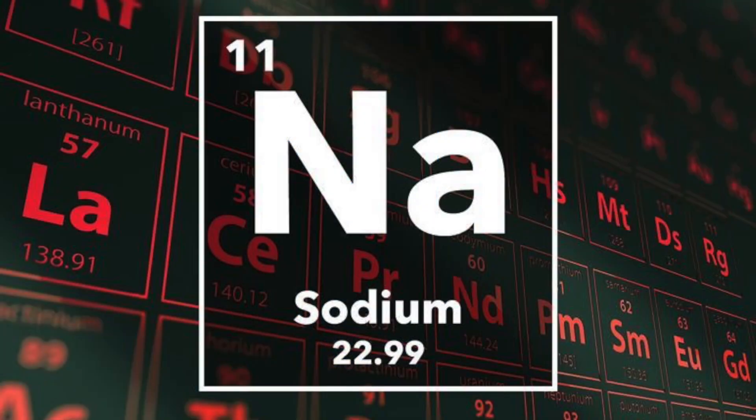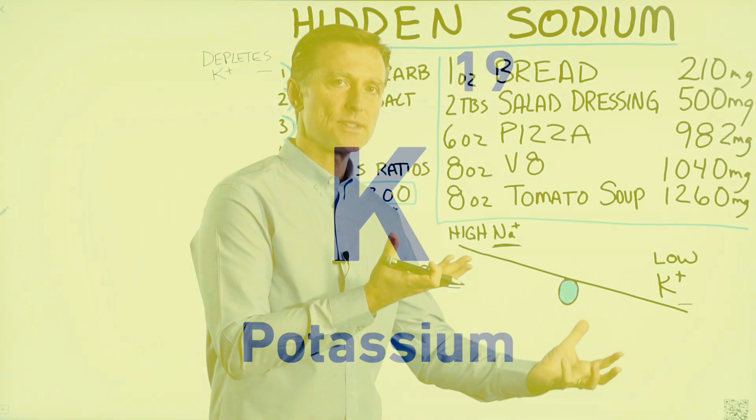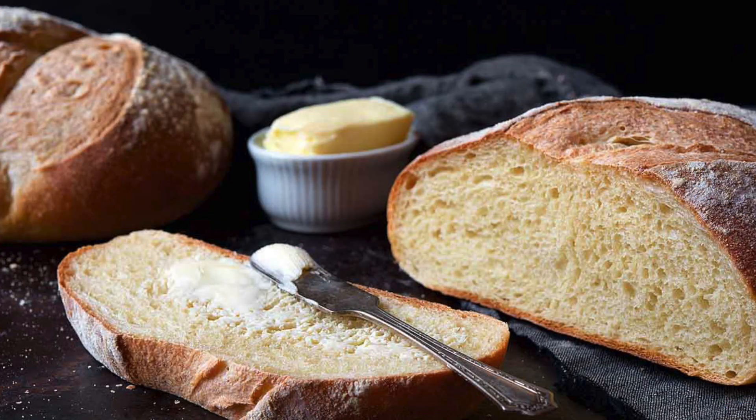The more sodium that you have in the diet, the lower the potassium. They work in opposites. What's interesting is one ounce of bread contains 210 milligrams of sodium.